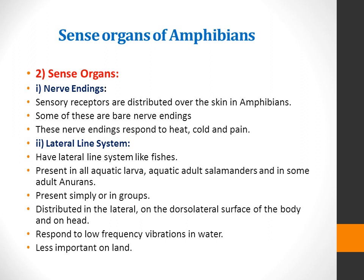The second sensory system is the lateral line system. Amphibians have a lateral line system like fishes. It is present in all aquatic larvae, aquatic adult salamanders, and in some adult anurans like frogs and caecilians. It is distributed on the lateral or dorsolateral surface of the body and on the head. It responds to low frequency vibrations in water.